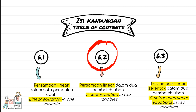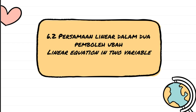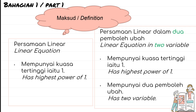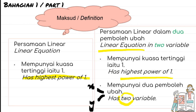So, linear equations in two variables — let's look at the definition first. A linear equation must have the highest power of one. So what does 'two variables' mean? The equation should have two variables. Most of the time we use x and y, or sometimes p and q, or any other letters — as long as we have two variables.